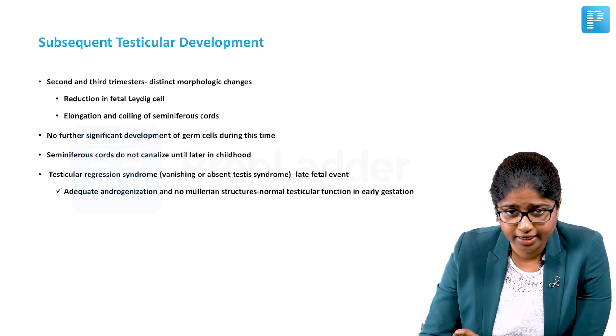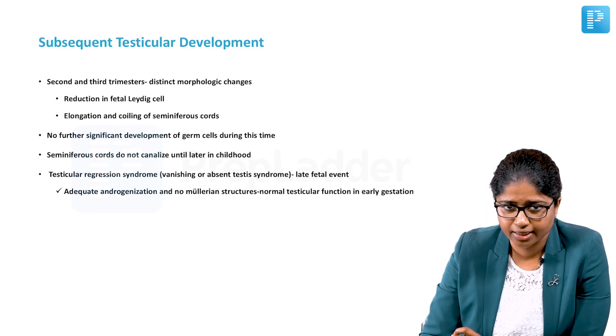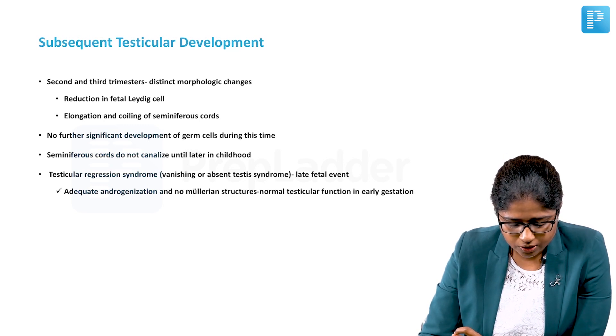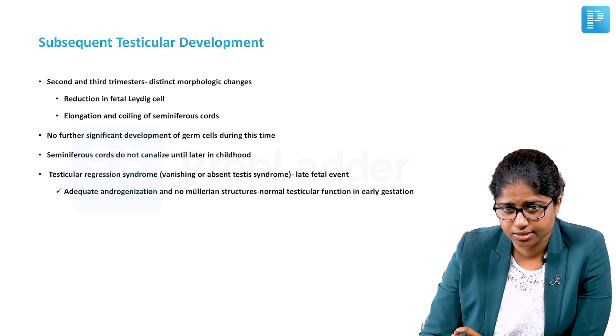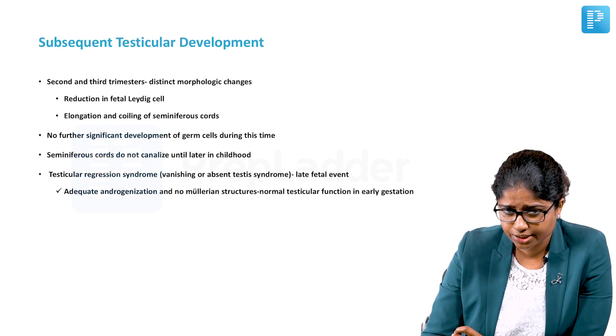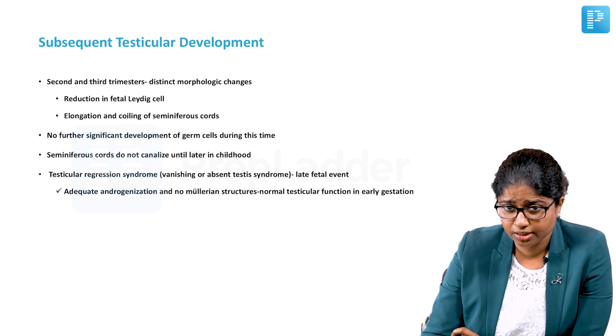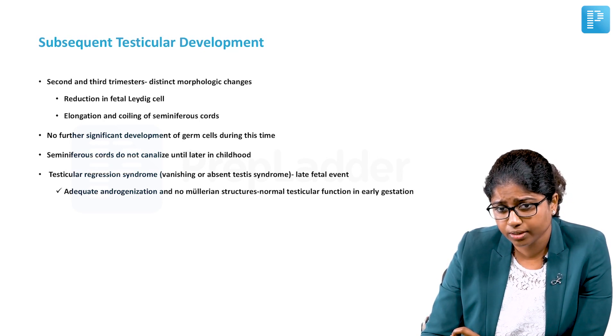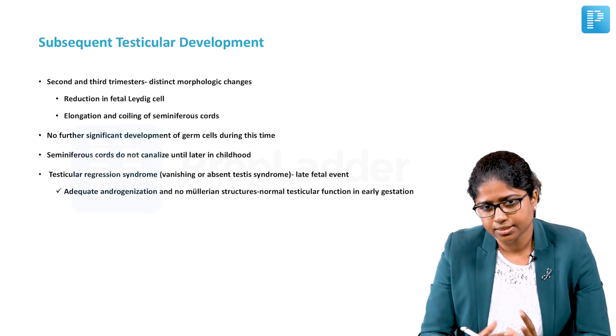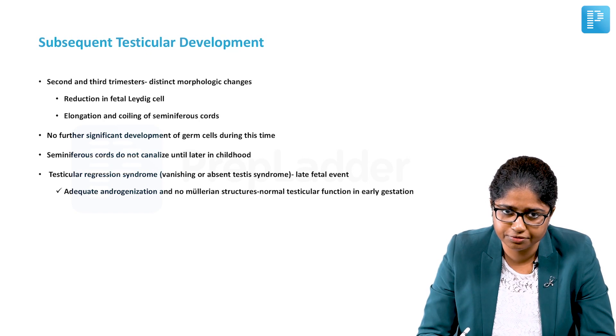Seminiferous tubules do not canalize until later on in childhood. You have blind tubes without any canalization till childhood. An important disease is the testicular regression syndrome or the vanishing testis syndrome. It occurs as a late fetal event. The testis is initially active and there is adequate androgenization and no Mullerian structure formation, and this is because there is normal testicular function in the early gestation. Testicular regression usually happens as a late fetal event. For some unknown reasons, there is damage and the absence of the testis later on in the fetal development.